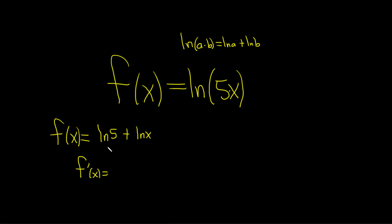So the natural log of 5, well, that's a constant. So its derivative is 0 plus, and then the derivative of the natural log of x is just 1 over x.